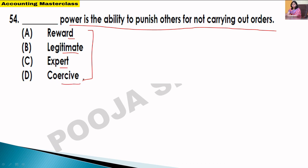Next question: which power is defined as the ability to punish others for not carrying out orders? The four options are all types of power: reward power, legitimate power, expert power, and coercive power. Which power gives the manager the ability to punish a subordinate for not carrying out an order?